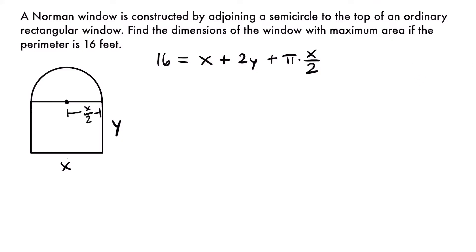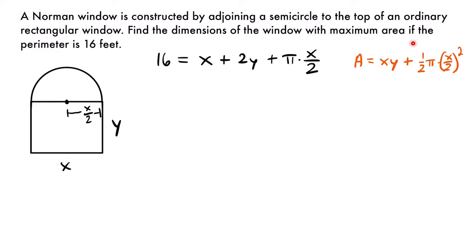Now let's write our primary equation for area. The area of this Norman window includes the rectangle area of x times y, plus the area of the semicircle. The area of a full circle is π·r², but we only need half of that, so we add (1/2)·π·r², where r = x/2, giving (1/2)·π·(x/2)². That is our primary equation for this optimization problem.